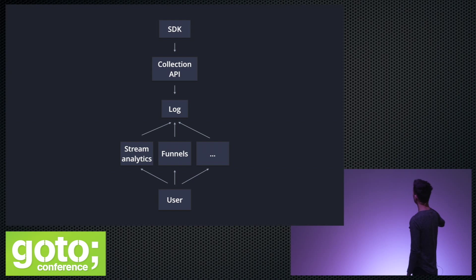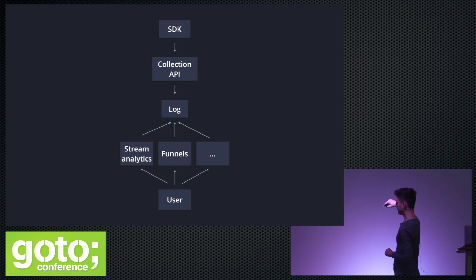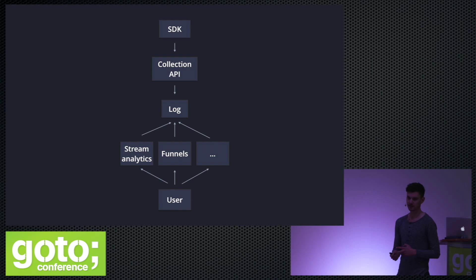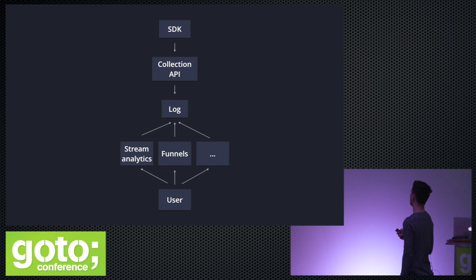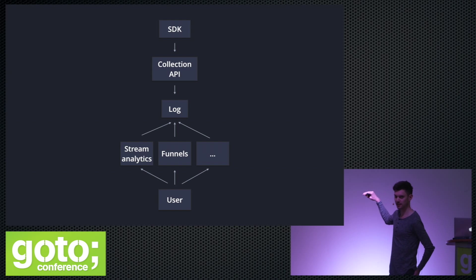This is what our system looks like. Data flows from top to bottom. The SDK goes into our collector services, which we have a bunch of. It all goes into a log, and we have a few different consumers of the log: streaming real-time analytics, funnels — which we do a special-case computation for — and lots more. These different systems are queried directly by the user via an HTTP API that customers and browsers use directly.